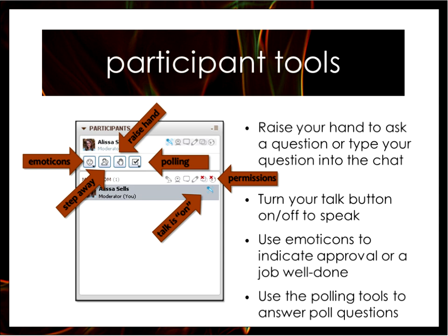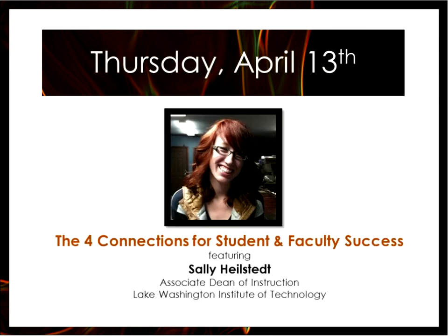The next tool over is the polling tool with a little check mark. We will be using that today. It actually has an A in it right now because Sally's polls are set up as A, B, C, D instead of yes or no. Feel free to test that out by clicking A. We will be using that poll three or four times throughout the presentation. Also, if you do raise your hand and get called on to speak, please make sure you turn your talk button on while speaking and off when you're done, so we don't get any background noise.